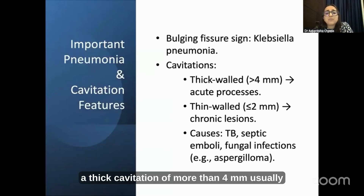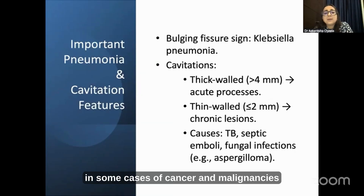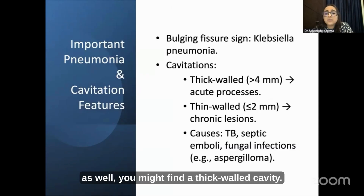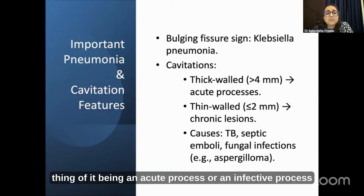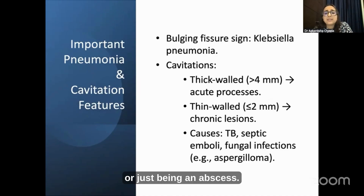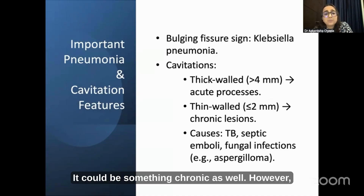With cavitations, a thick cavity wall of more than 4 mm usually suggests an acute process. However, in some cases of cancer and malignancies as well, you might find a thick-walled cavity. So don't just assume it is always an acute or infective process or just an abscess — it could be something chronic as well.